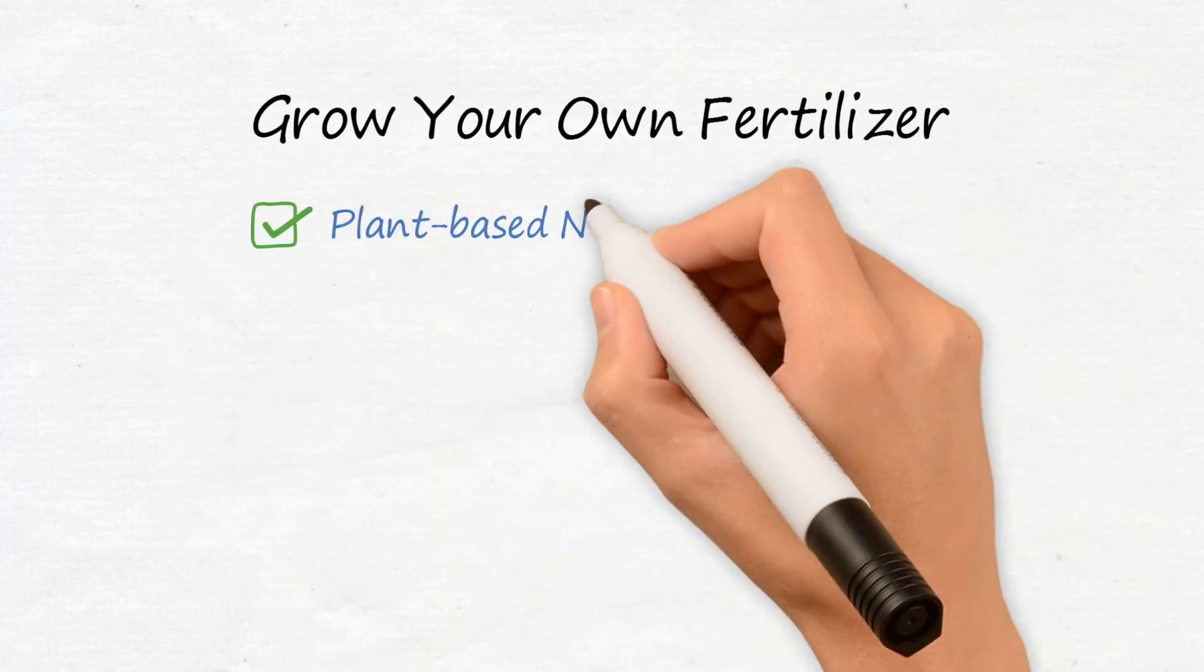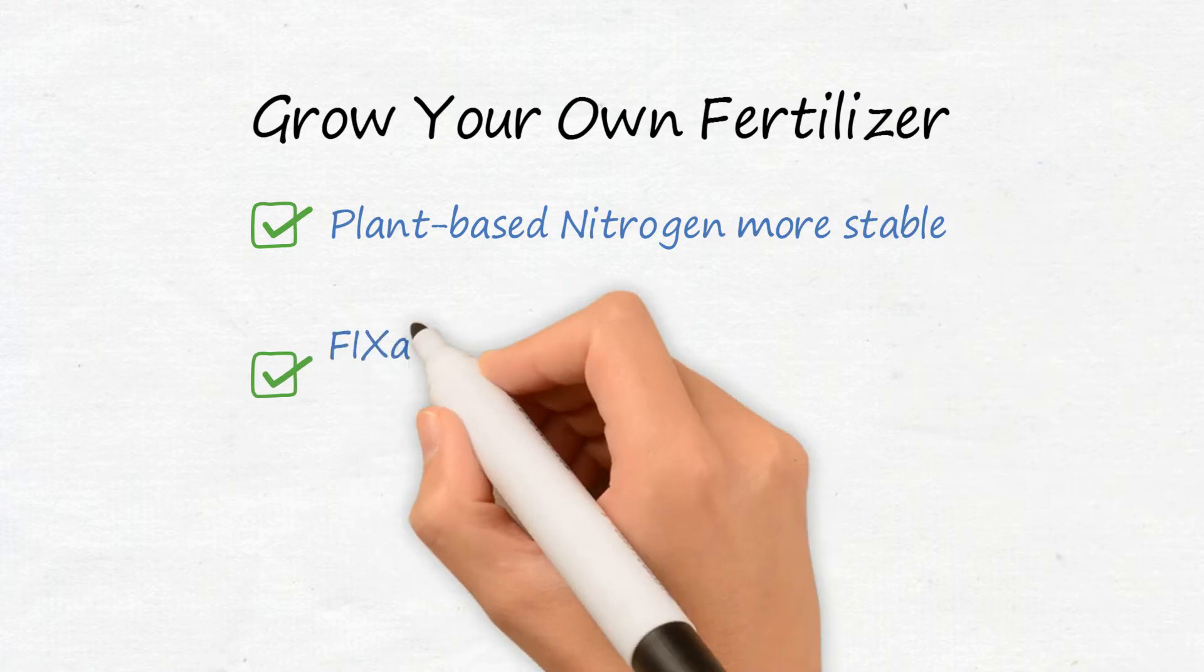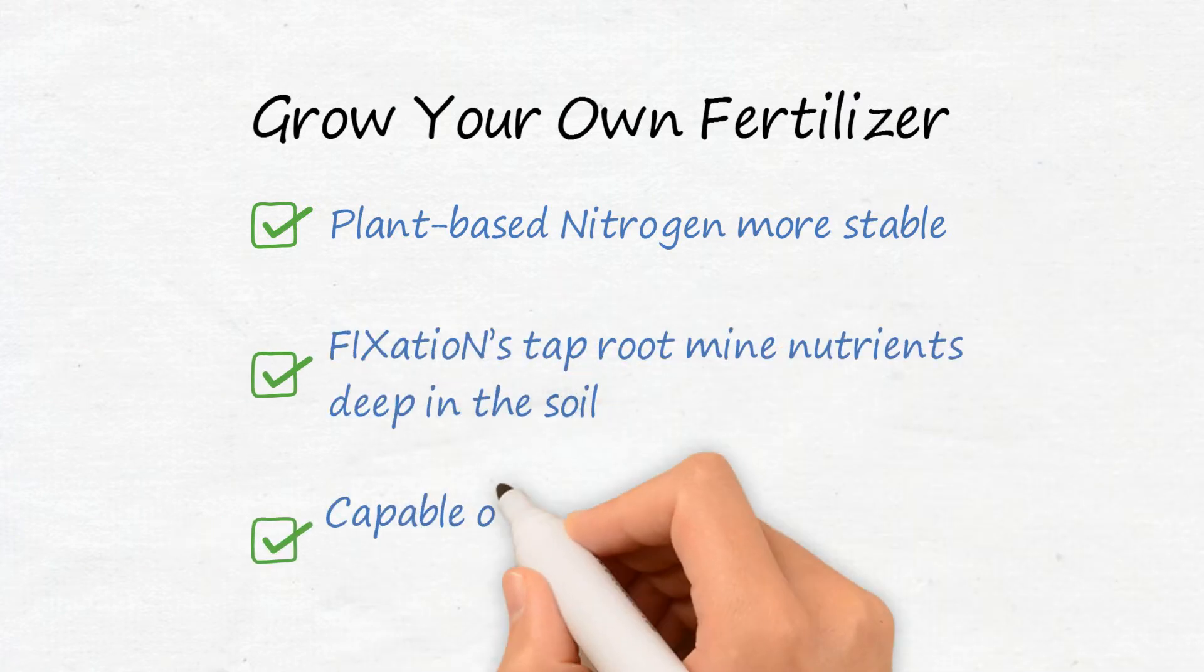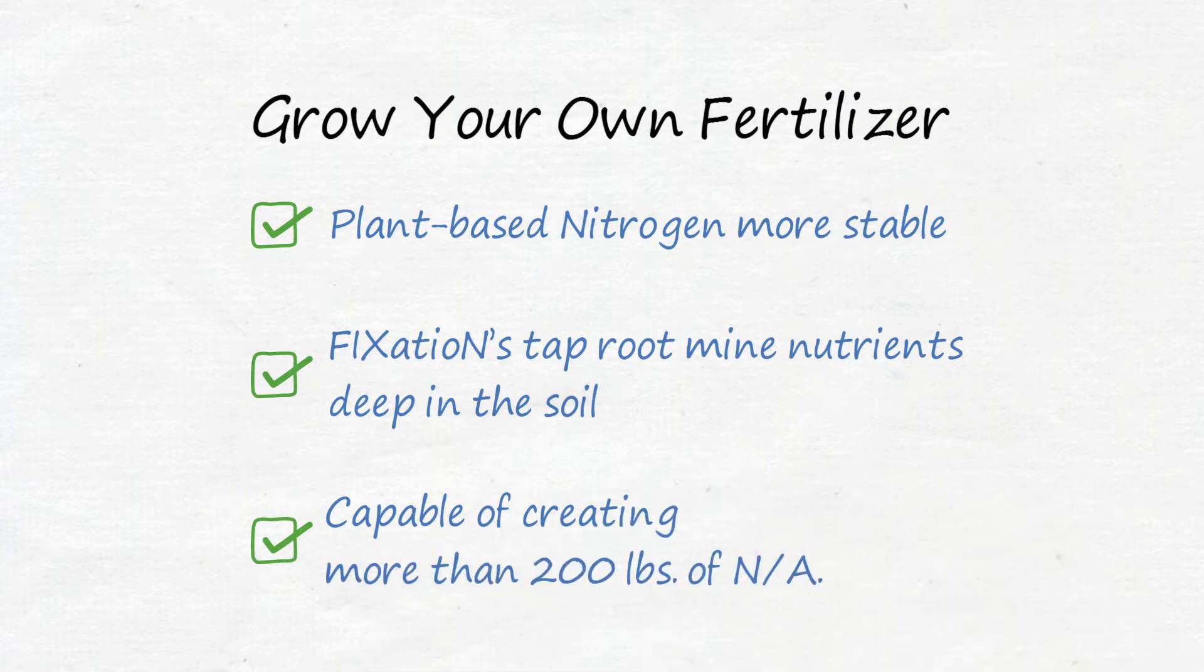Grow your own fertilizer. Plant-based nitrogen is more stable. Fixation's taproot will mine nutrients deep in the soil, capable of creating more than 200 pounds of nitrogen per acre.